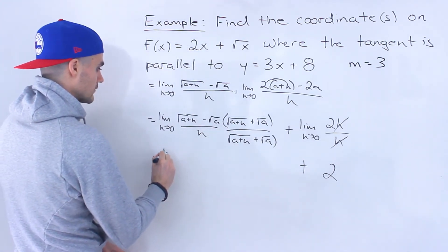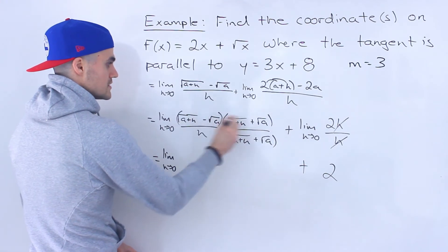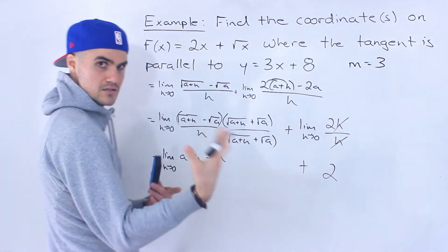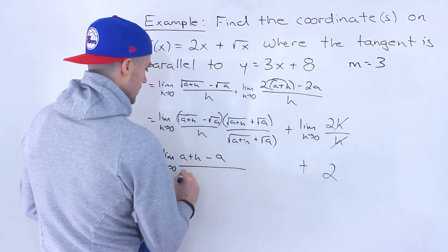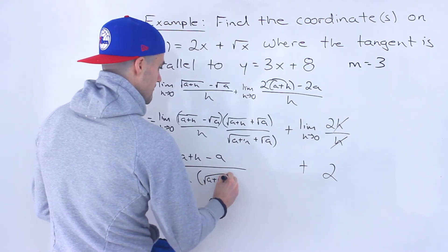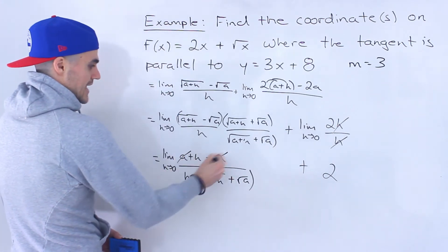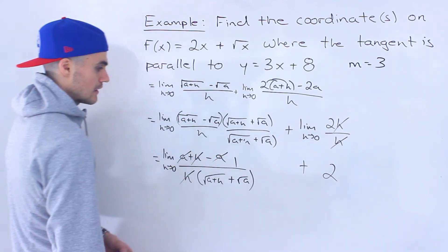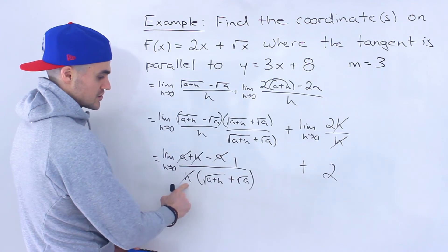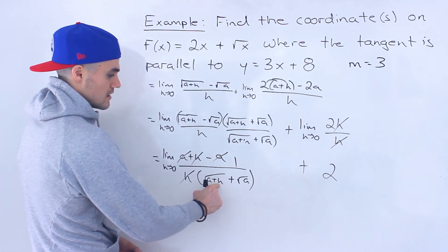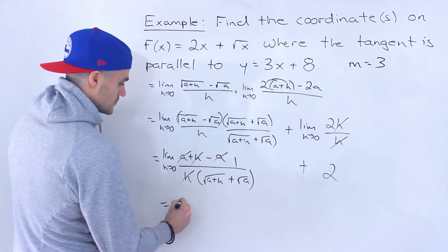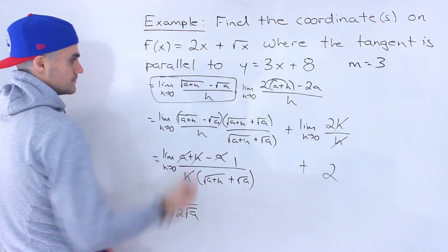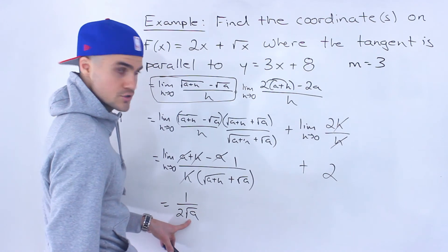Over here there's a bit more work. For the limit as h approaches 0 of root a plus h minus root a all over h, we rationalize by multiplying by root a plus h plus root a over root a plus h plus root a. When we multiply the numerators, we get a plus h minus a — the square roots go away. The a's cancel, we're left with h on top, the h's cancel, giving 1. Then plugging in 0 for h, we get 1 over root a plus root a, which is 1 over 2 root a.